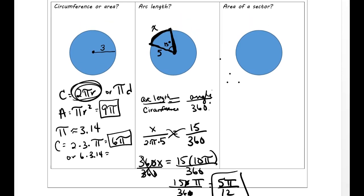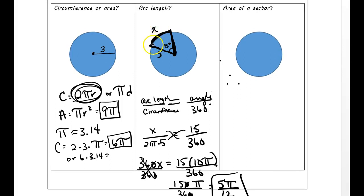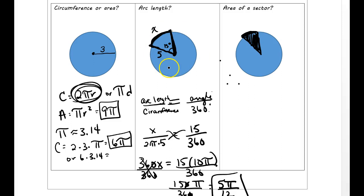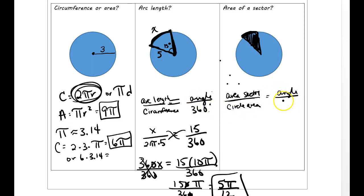The next section jumps from arc length over to area of a sector. If arc length has to do with the outside, when we're doing an area of a sector we don't care about the outside as much — we actually care about everything on the inside. It's like the area of a piece of pie. On arc length we compare to circumference because it's only the outside. But on a sector, since it has to do with the inside, we compare the area of the sector to the area of the whole circle. Same idea, except now we're doing area instead of circumference.